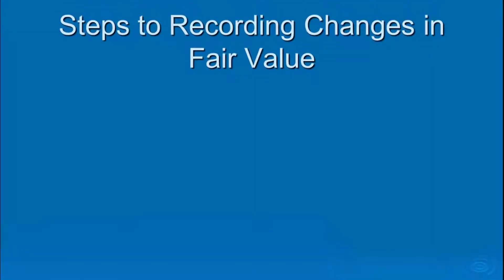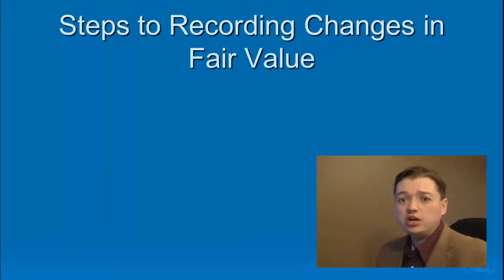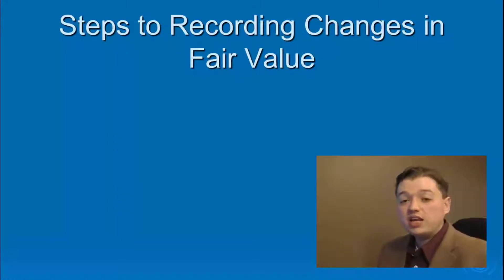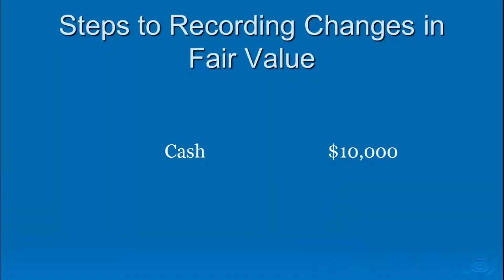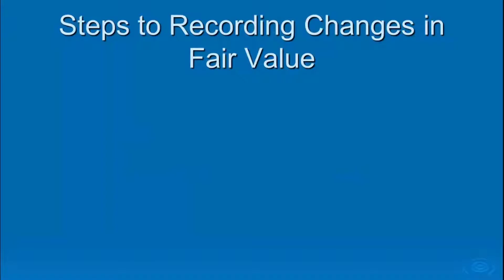Let's talk about the steps to recording trading and available for sale securities. The very first step is to record the purchase. Basically, whatever you pay for these securities gets capitalized into the asset account — whether it's a trading portfolio or an available for sale portfolio. You take the cash paid for the actual security plus whatever you pay your broker, and all of that goes into the investment account. It's a simple transaction: debit the asset, credit cash.